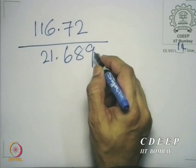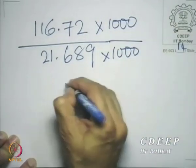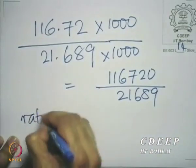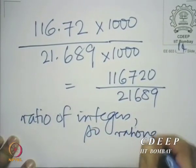The word rational comes from the idea of rationality in the integers. Let us take a rational number as we understand it for integers. 116.72 divided by 21.68 is a rational number. Even if I put 689 in the denominator, it will be a rational number. Why? Because I can multiply the numerator and denominator by 1000, and that leads me to 116720 divided by 21689, which is a ratio of integers. So it is rational.